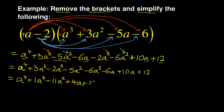And the last part — the number was 12. So the final answer is A to the power of 4 plus A to the power of 3 minus 11A squared plus 4A plus 12. You cannot simplify this further because A to the power of 4 is different from A to the power of 3, which is different from A squared, which is different from A, and which is different from 12. That is the final solution.